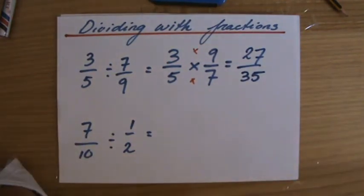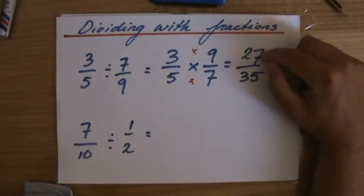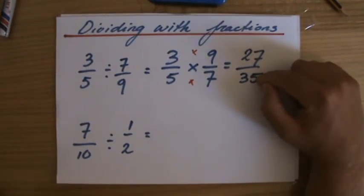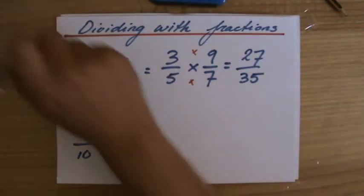Now be careful. Can I simplify this final answer? Because you always have to simplify fractions. I can divide 27 by 3, but I can't divide 35 by 3. 35 I can divide by 5 or 7, but I can't divide 27 by 5 or 7. So that really is my final answer.